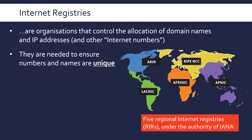A lot of this revolves around the need to ensure that certain things are kept unique, especially IP addresses and domain names. An IP address is meant to be linked to a single device, so if you type in an IP address you'll be able to connect to that device. Similarly, you can't have two companies with the same domain name — it undermines the whole system.